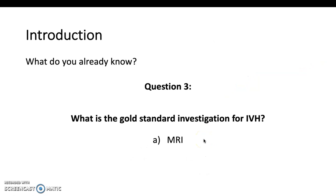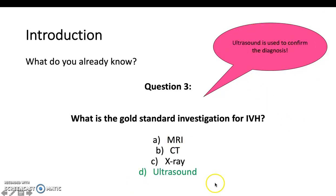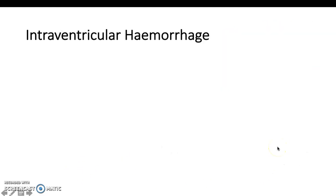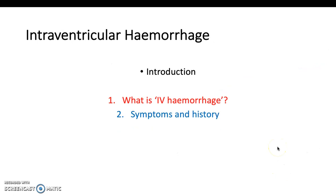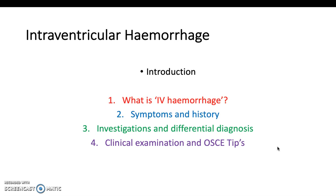Final question: what is the gold standard investigation for intraventricular haemorrhage? Think about the age of the patients, especially since this is a paediatric specialist area. You'd want to do an ultrasound because it involves the least radiation and is safest for children. We'll be covering what IVH is, symptoms and history, investigations, differentials, clinical examination, and OSCE tips.